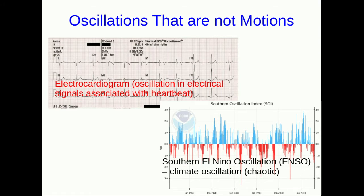The oscillations I've just shown you are all motions, but not all oscillations have to do with motion. Here are two examples. The first is an electrocardiogram, which is a measurement of oscillations of electrical signals in your body associated with your heartbeat. The second, a rather irregular-looking oscillation, is a plot over several decades of what's called the Southern El Niño Oscillation, one of Earth's climate oscillations — and unlike the others we'll be looking at, this one is highly irregular and chaotic.